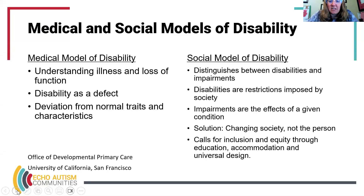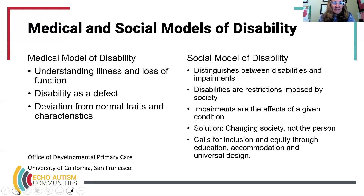What the social model of disability is really thinking about is changing society — in planning, thought, and perceptions — not changing the person. This means thinking about inclusion and equity, education, accommodations, and universal design. The Office of Developmental Primary Care at UC San Francisco has a great section on the medical model versus the social model of disability, and I encourage you to take a look if you want to learn more.